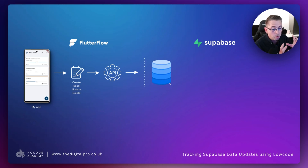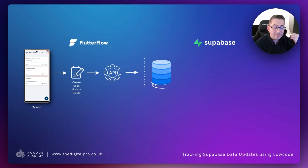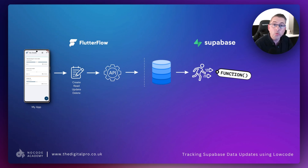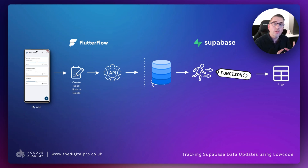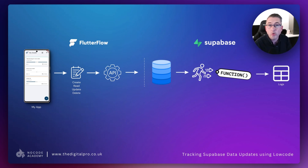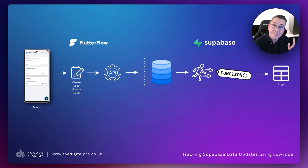We'll then move into the Supabase side, work out what change is being made to a particular table — whether it's a delete, update, or something else. That will invoke a trigger, which will ultimately call a Supabase function. That function does all the magic work for us. It's a reusable function you can apply to any table in your Supabase database, and it will log those changes into your logs table.